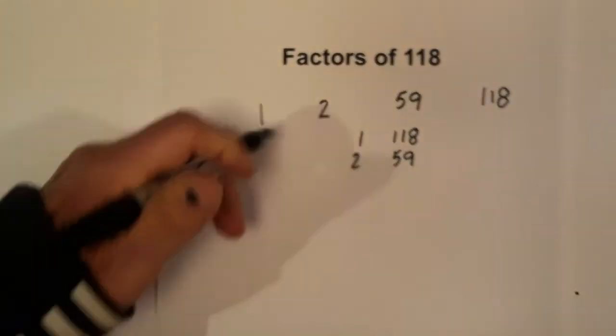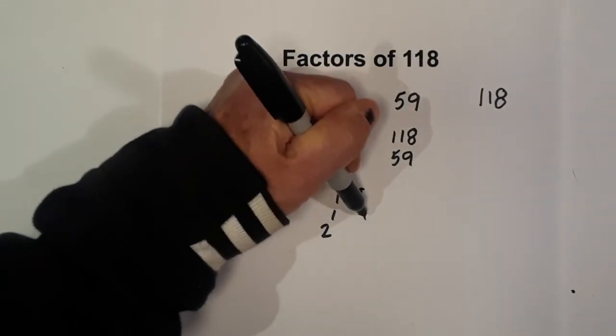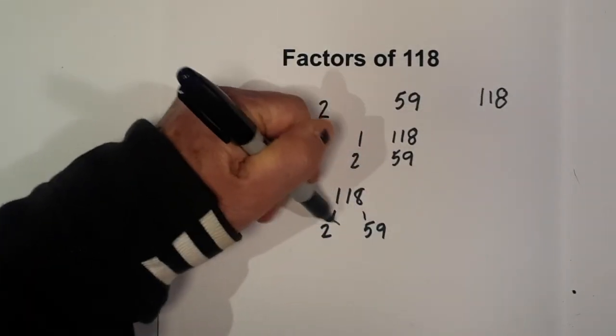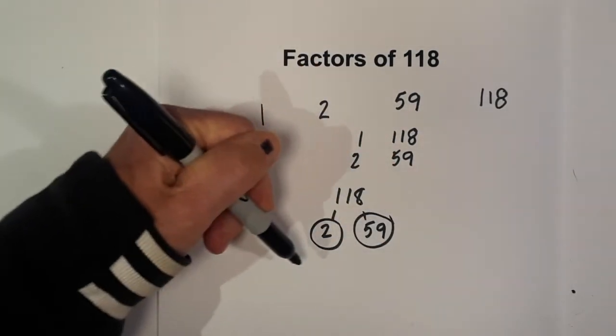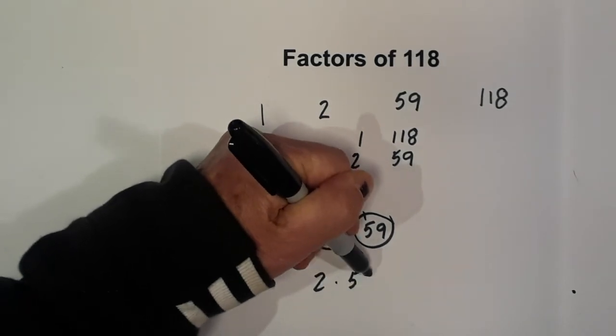Now to complete a factor tree for the prime factors, it is just 2 times 59. They are both prime, so circle both of them. The prime factors of 118 are 2 and 59.